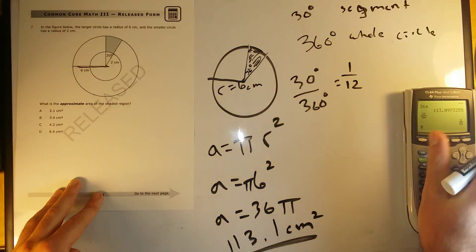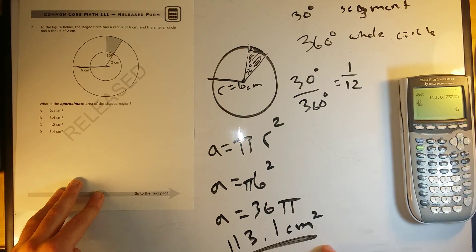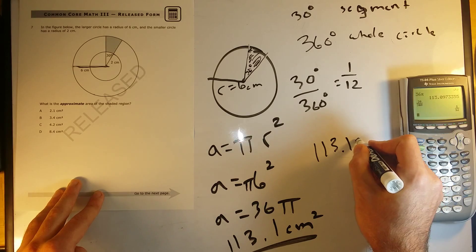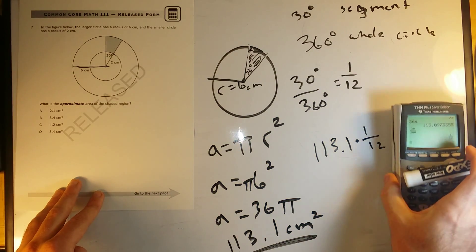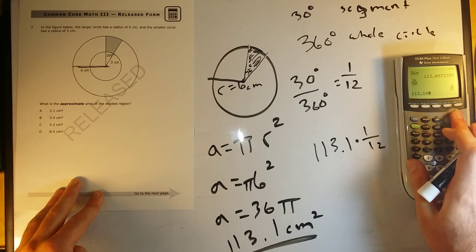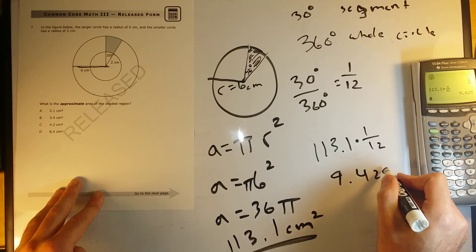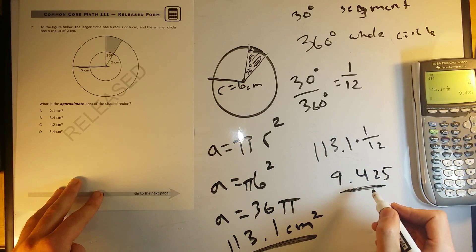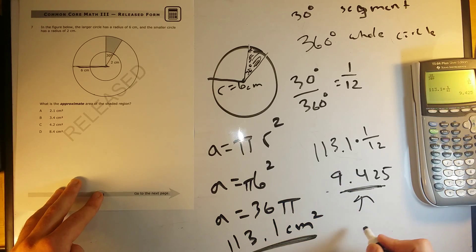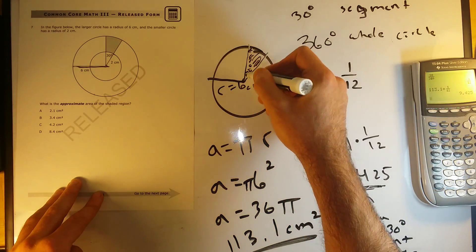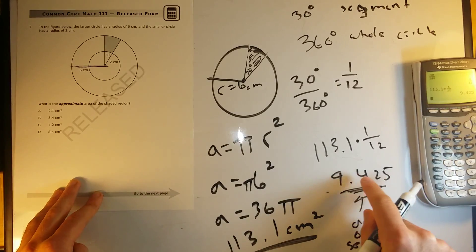So in other words, we're going to take 1/12 of 113.1. If we take the whole area and multiply by 1/12 — so 113.1 times 1/12 — this gives me 9.425. So 9.425 is the area of the 30 degree segment on the large circle. That whole area is 9.425 centimeters squared.